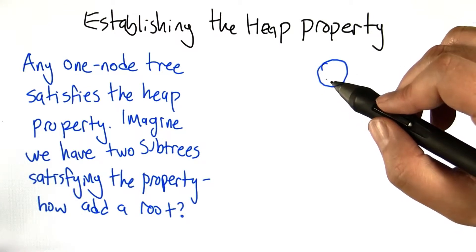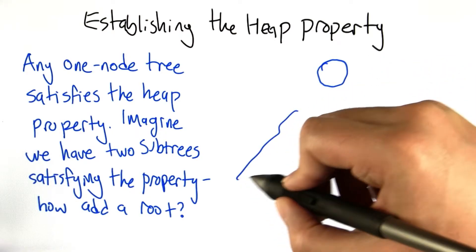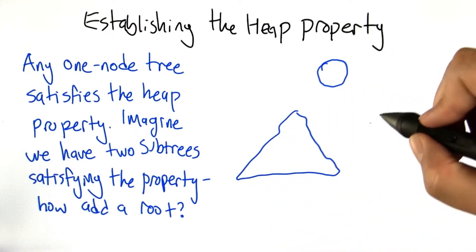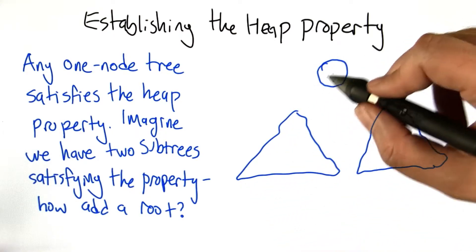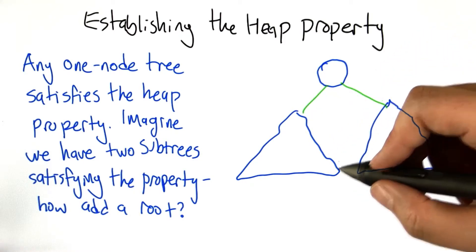That case is really easy. But now, let's imagine that we've somehow managed to create two heaps and we'd like to join them together by adding another node and have the heap property hold.